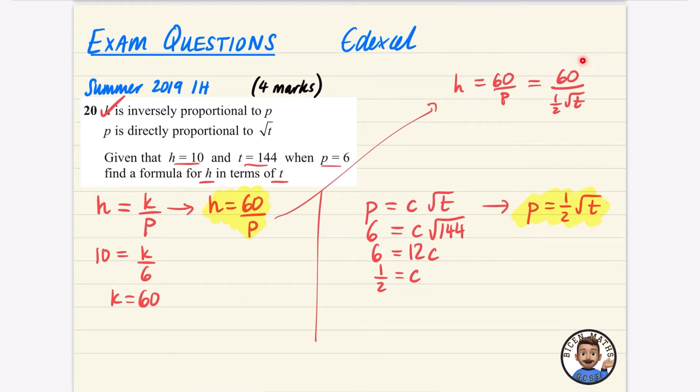I've got that H is equal to 60 over a half root T. But I don't like the 60 divided by a half. So you might want to think to yourself, what is 60 divided by a half? Well, that's the same as 60 multiplied by 2 over 1, which is just 120. So this is H equals 120 over the square root of T. And that's our answer.